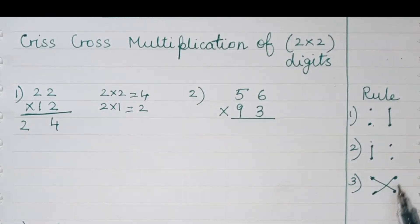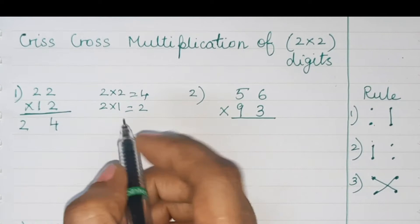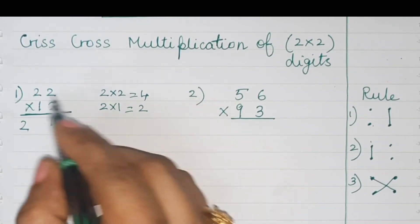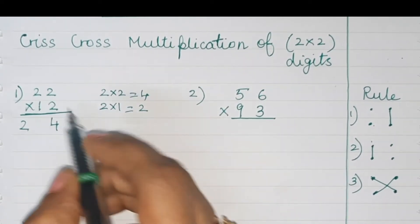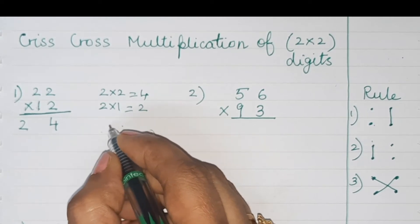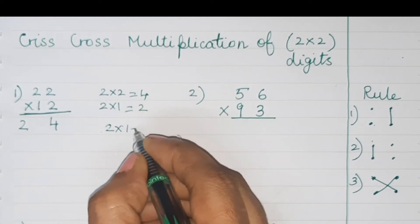Now we'll do cross multiplication. We'll multiply two into one and two into two. Two into one is two and two into two is four.